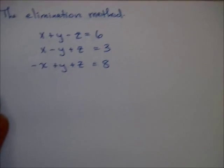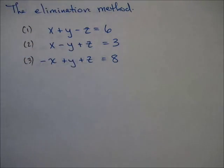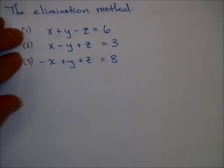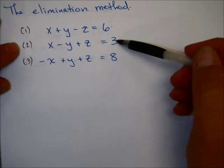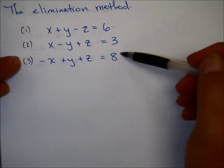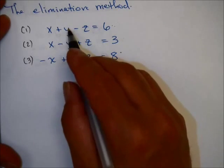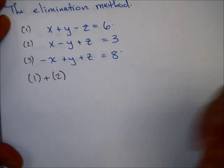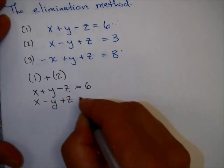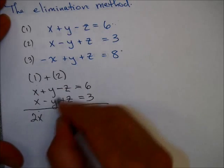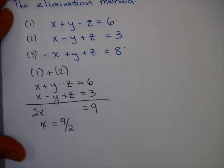Is there an elimination method for three equations with three unknowns? The answer is yes. The idea is to multiply equations by something if necessary and add them to eliminate one of the variables. The key is to take equation 1 and combine it with equation 2, and equation 1 combined with equation 3 — or use two different equation pairs. In this example, if I just add equation 1 and equation 2, I end up with 2x, no y, no z equals 9. I was really lucky, and I have a solution for x: x equals 9 halves.